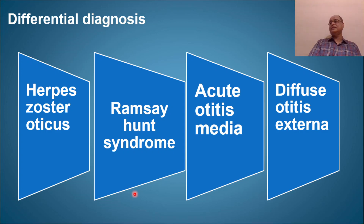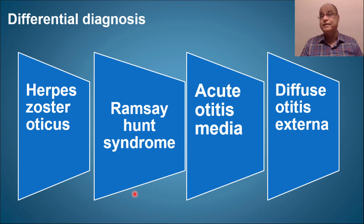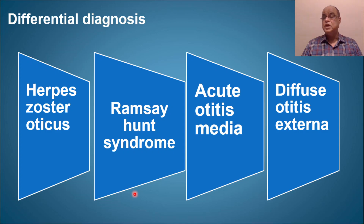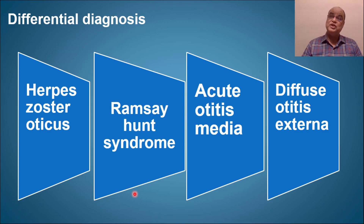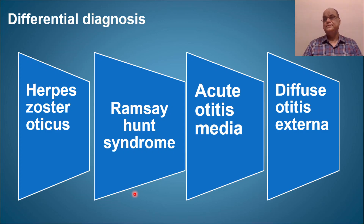In herpes zoster oticus, bullae typically form on the concha and can involve the posteromedial surface of the pinna; vesicles are water-filled and produce watery discharge on rupture. In contrast, in otitis externa hemorrhagica, bullae are blood-filled, prone to rupture producing blood-stained discharge, located on the superficial surface of the tympanic membrane and deep meatus only — not extending to other canal parts or the pinna.